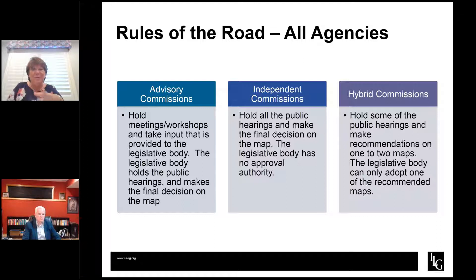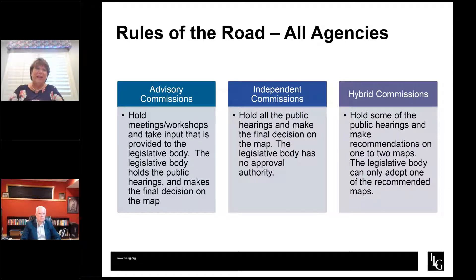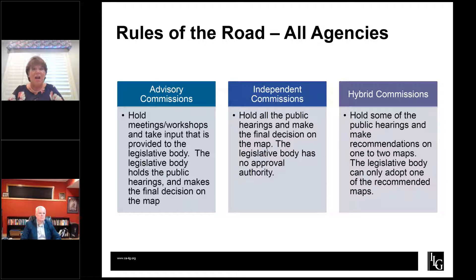There is also a hybrid commission, which is a little bit of both — they appoint a commission to conduct some public hearings, make recommendations on one to two maps, and then the council must adopt one of the maps recommended by the hybrid commission. They don't have the authority to draw their own map at that point. Any community looking at a commission option really needs to start taking action now, because it takes about two to three months to form and recruit a commission and train those commissioners on their roles.